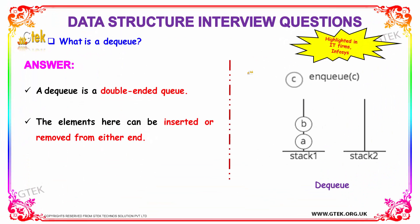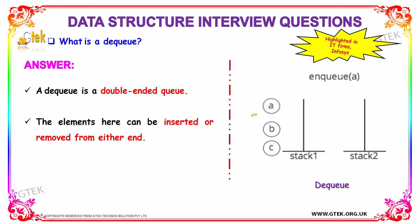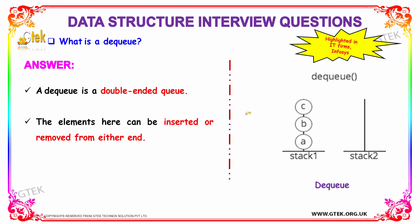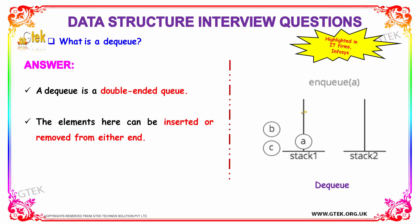Our next question is: what is a dequeue? Dequeue is nothing but a double-ended queue. The elements here can be inserted or removed from either end — from the front end or the back end.